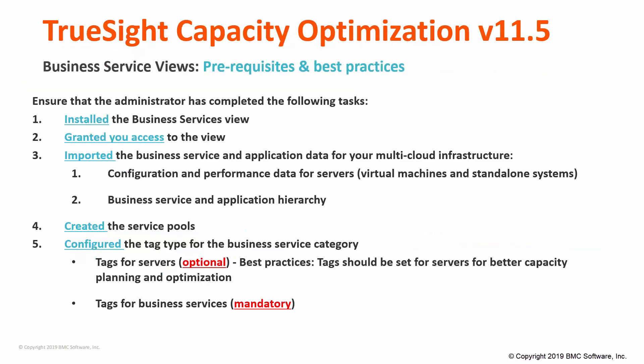And finally, here is a recap of what an administrator has to do to successfully populate the Business Service View. First, install the Business Service View. Then, grant access to users. Third, import Business Service and Application Data for Multi-Cloud Infrastructure, from Configuration and Performance Data for Servers, Virtual Machine and Central System, and Business Service and Application Hierarchy. Create a Service Pool and configure the Tag Types for Business Service Category. Tags for Servers are optional, but best practices suggest that tags should be set for servers for better capacity planning and optimization, whereas tags for Business Services are mandatory.